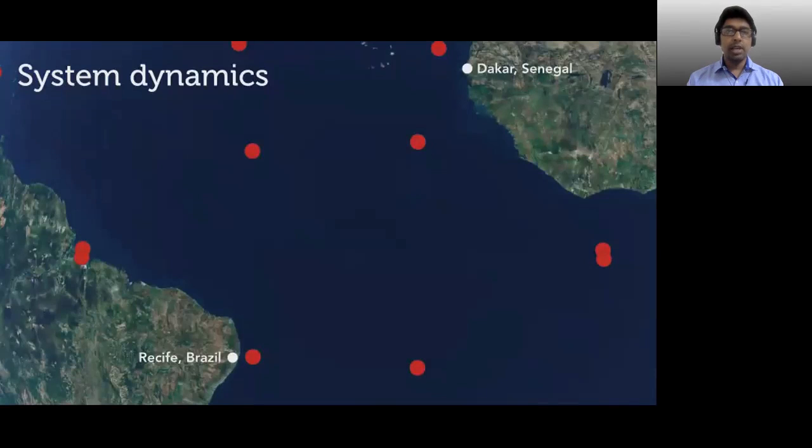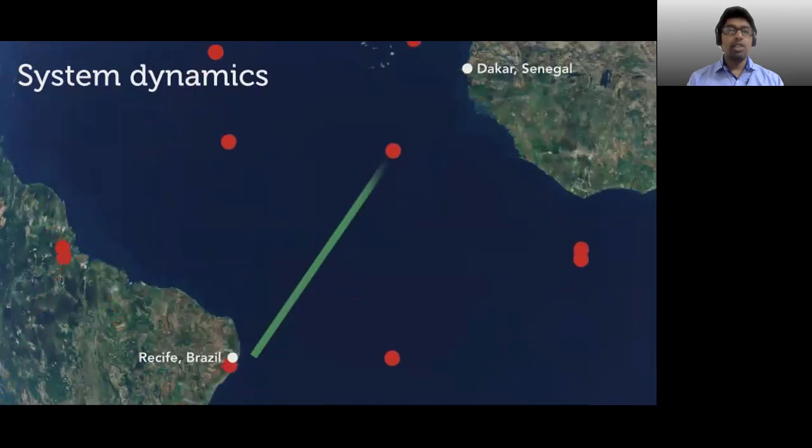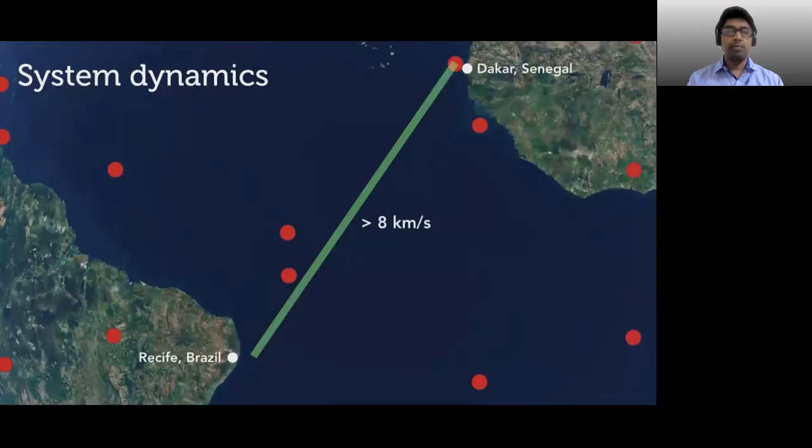Another interesting aspect is the system dynamics of these constellations. Satellites move very fast relative to the Earth and with respect to each other. If a satellite is now over eastern Brazil, in six minutes it will already reach Africa, crossing the entire Atlantic, traveling more than eight kilometers per second. Such highly dynamic behavior translates to links becoming infeasible in minutes, and link latencies changing all the time, irrespective of the queuing. We'll see later how this dynamicity influences TCP behavior.